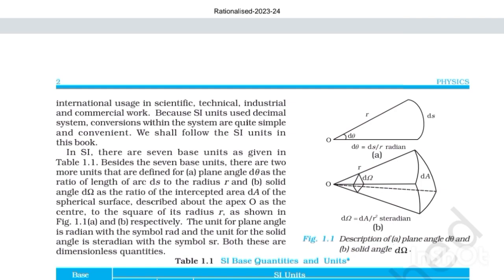We shall follow the SI units in this book. In SI, there are seven base units as given in Table 1.1. Besides the seven base units, there are two more units defined for: A. Plane angle dθ as the ratio of length of arc ds to the radius r, and B. Solid angle dΩ as the ratio of the intercepted area dA of the spherical surface described about the apex O as the center, to the square of its radius r, as shown in figure 1.1a and 1.1b respectively. The unit for plane angle is radian with symbol rad, and the unit for solid angle is steradian with symbol sr. Both these are dimensionless quantities.